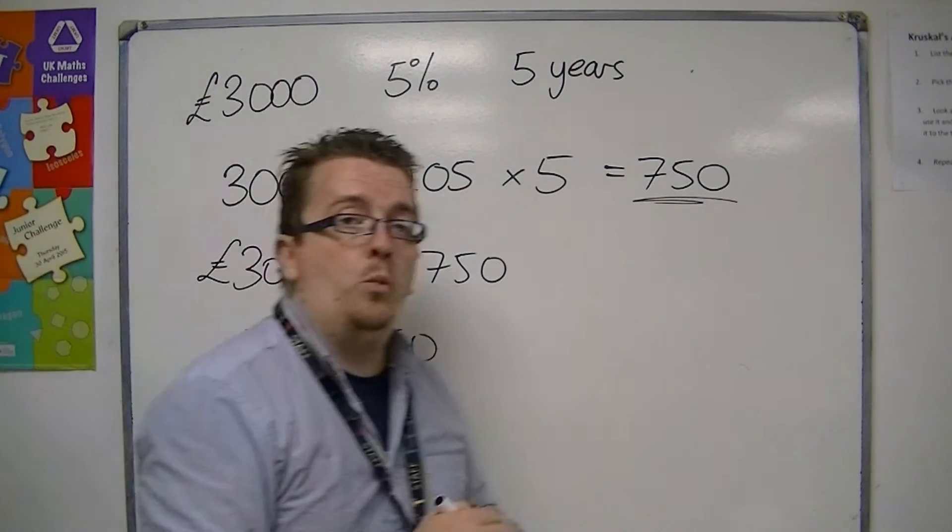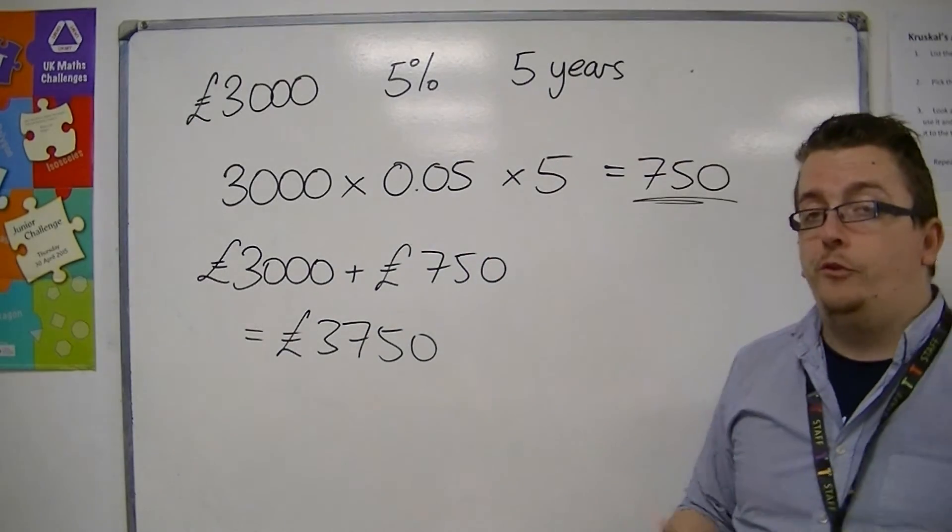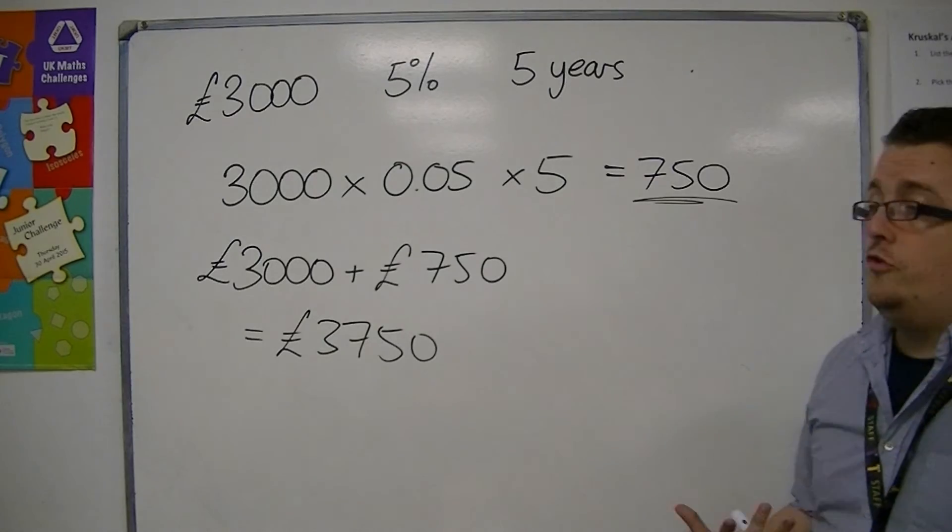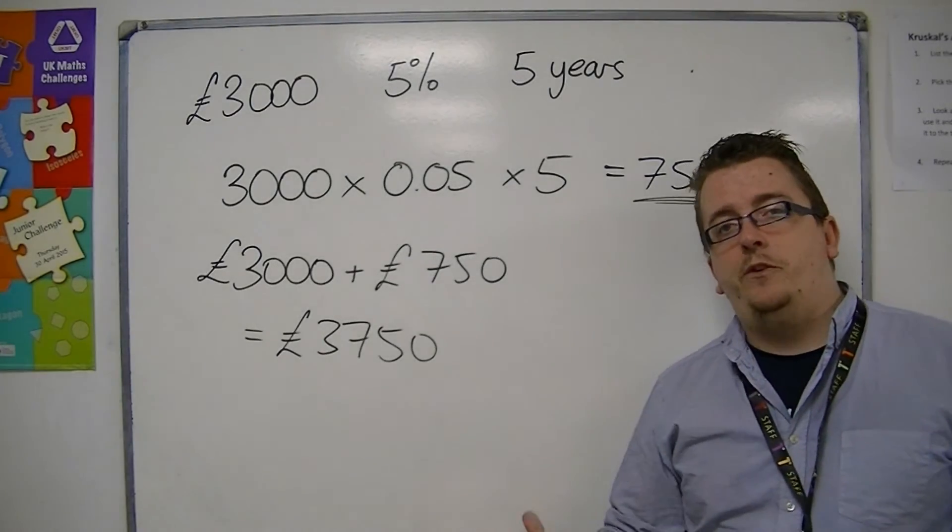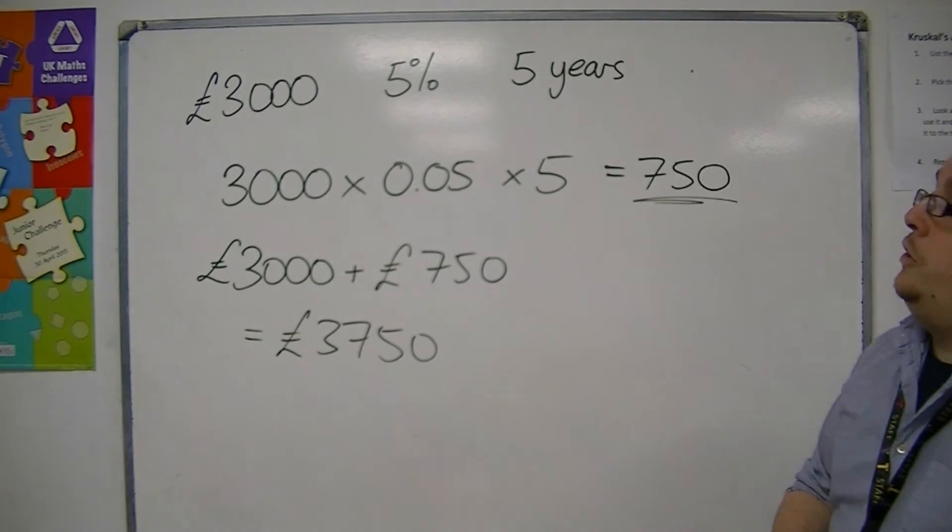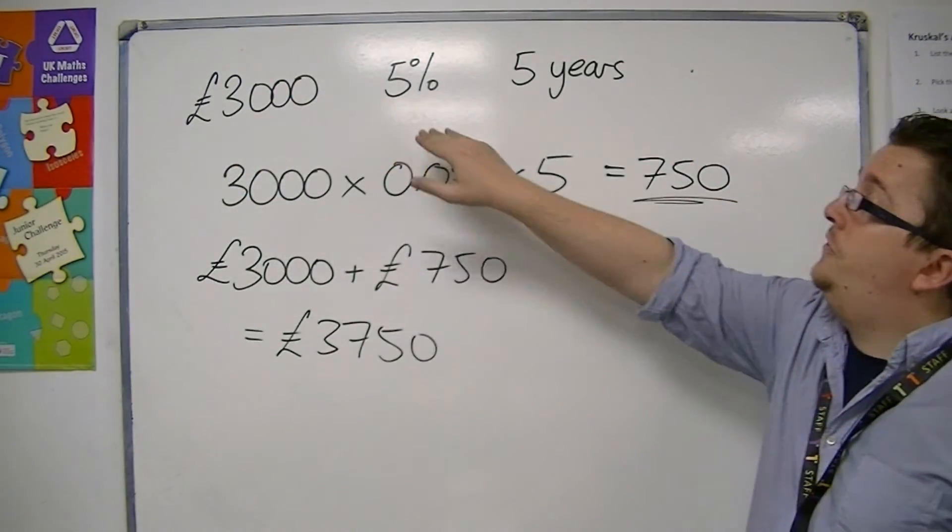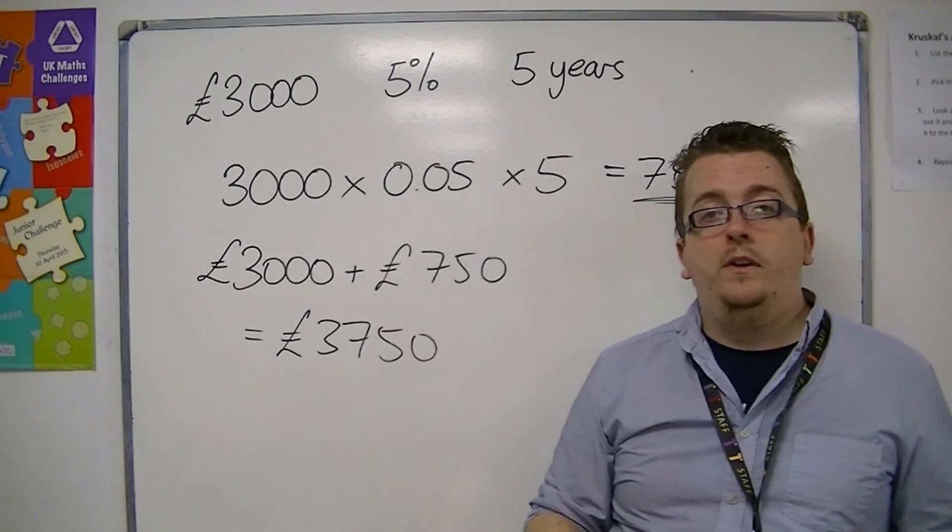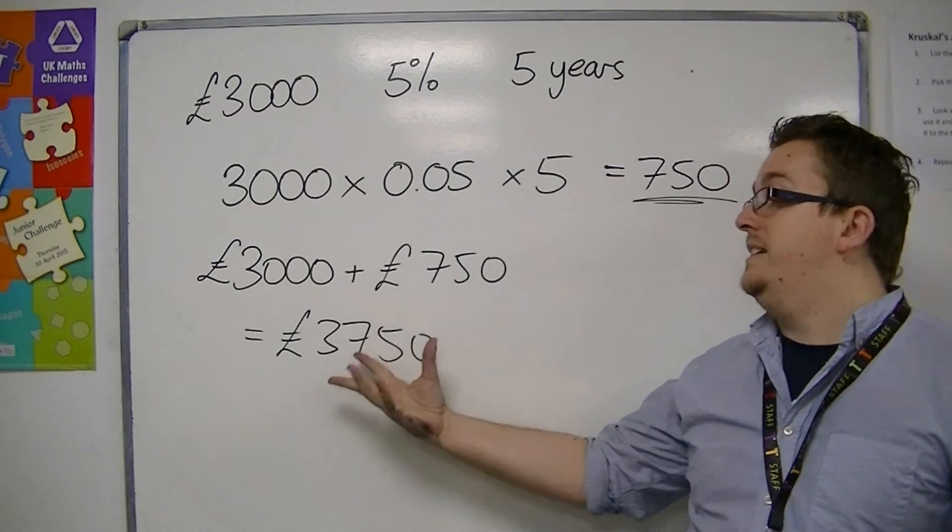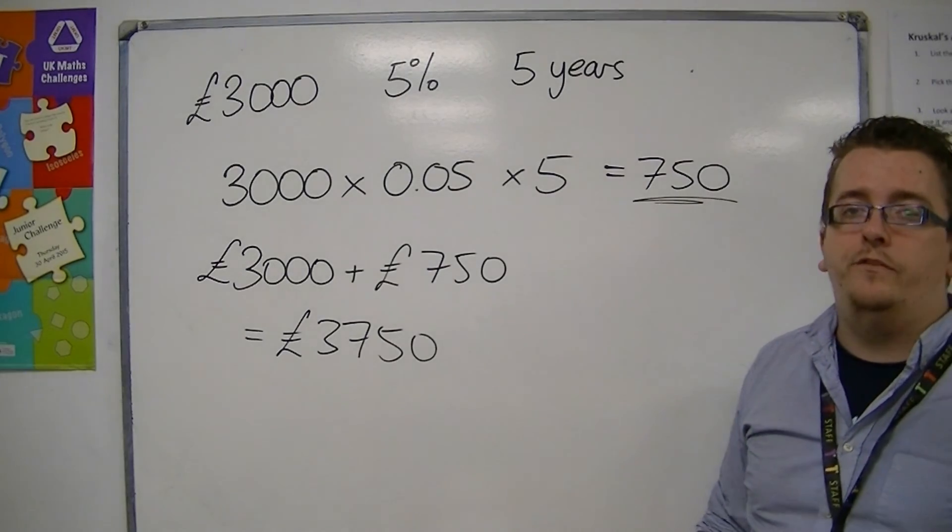So it's a nice simple way of adding interest to your money. But as I said, in the majority of cases, banks will be using compound interest rather than simple interest. So you just multiply the amount by the percentage by the number of years. And then add it on to what you started with. And that is how much money you will have at the end of the five years.